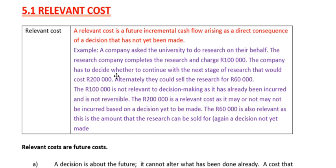The company has to decide whether to continue with the next stage of research. We've got a decision to make — should we carry on? It says that would cost two hundred thousand. So this is a relevant cost, because if we decide in the future to research some more, we will incur a cost, and that will be a future incremental cash flow arising as a direct consequence of a decision that is yet to be made.